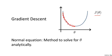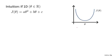In contrast, the normal equation gives us a method to solve for theta analytically, so that rather than needing to run this iterative algorithm, we can instead solve for the optimal value of theta all in one step. It turns out the normal equation method has some advantages and some disadvantages, but before we get to that, let's get some intuition about what this method does.